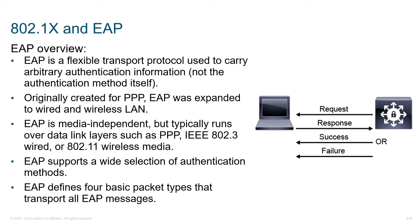EAP is the Extensible Authentication Protocol, defined as a flexible transport protocol used to carry arbitrary authentication information. When a user or supplicant first joins the network and that link comes up, the authenticator is typically going to query it and say, 'Who goes there?' This is what we call EAP — you'll also see this abbreviated as EAP over LAN — and what we're doing is basically authenticating to the network, telling them who we are before we go any further.